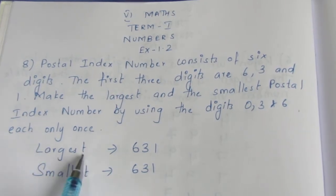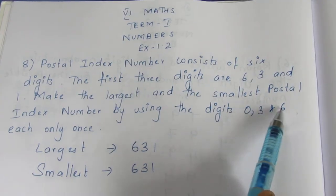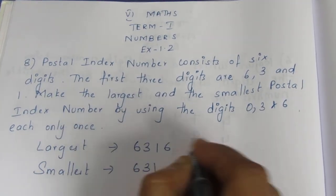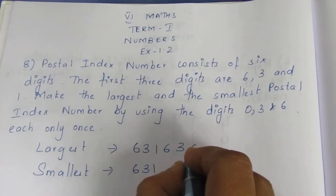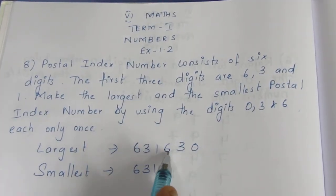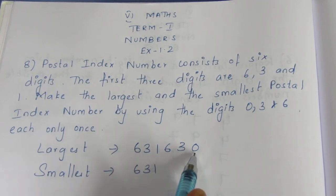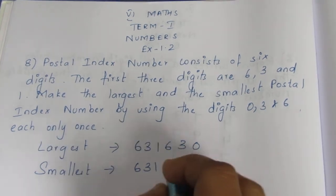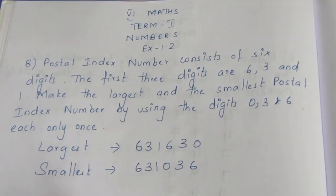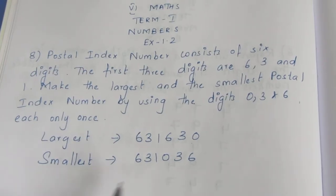It is very easy. For the largest number, we pick the largest number first — the biggest number here is 6, then 3, then 0. For the smallest number, this is the reverse: 0, 3, 6. So this is the largest number and this is the smallest number.